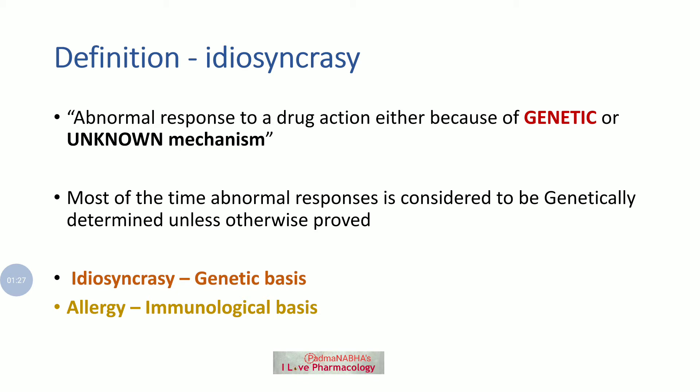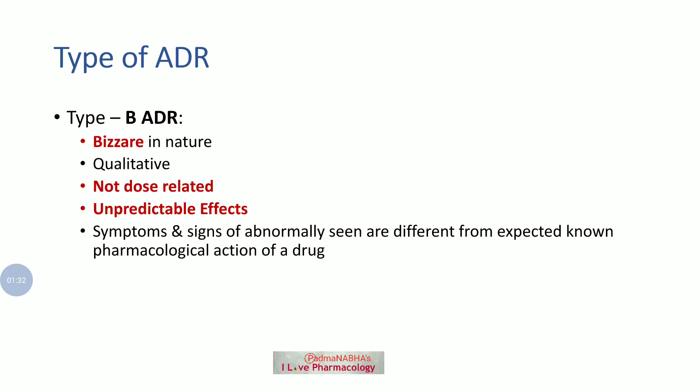How do you differentiate between idiosyncrasy and an allergic reaction? Idiosyncrasy has a genetic basis, whereas allergic reactions have an immunological basis. Idiosyncrasy is a Type B adverse drug reaction — it is bizarre in nature, a qualitative type of reaction, not dose-related, and unpredictable in nature.